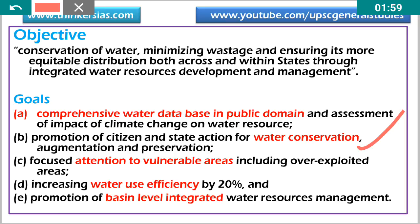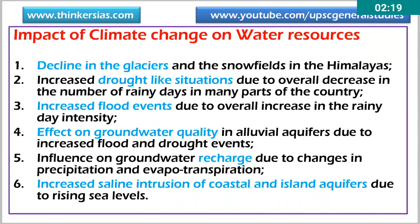Fifth goal is promotion of basin-level integrated water resource management. A river should be seen in a holistic way — it is a basin, not just a stream flowing across a slope. We need to look from a larger perspective in order to manage the river. The river basin approach is the key here.